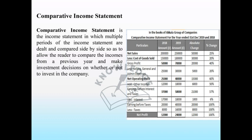The comparative income statement is the income statement in which multiple periods of income statements are dealt with and compared side by side, so as to allow the investor to compare the incomes from the previous year and make an investment decision on whether or not to invest in the company.